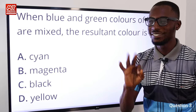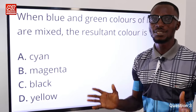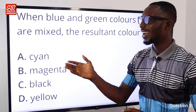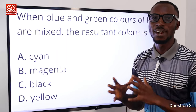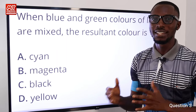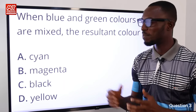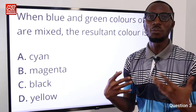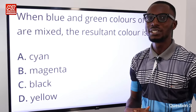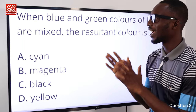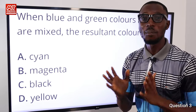Question number three: when blue and green colors of light are mixed, the resultant color is cyan. Cyan is a mixture of blue and green. Magenta is a mixture of red and blue. Yellow is a combination of red and green. Black is the absence of light and white is the combination of several colors. So mixing blue and green gives you cyan — option A is correct.